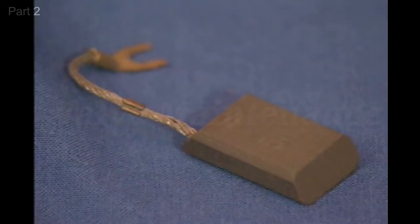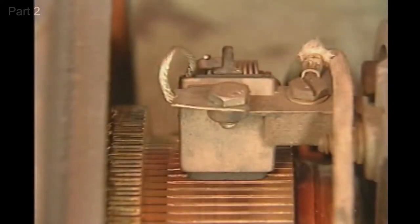Now here's an example of a good brush, one that's not worn or damaged. The surface of the brush is not chipped or cracked, and it is smooth and shiny. The shape of the brush conforms to the shape of the commutator, and the brush is not too short.